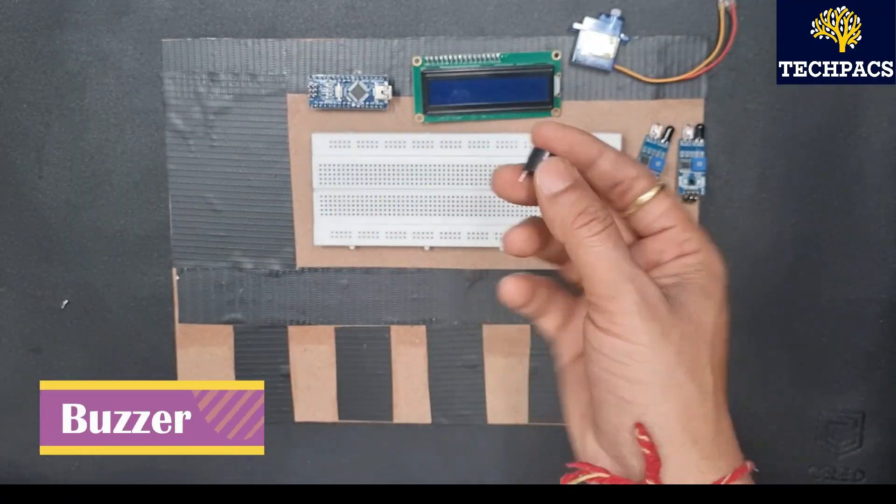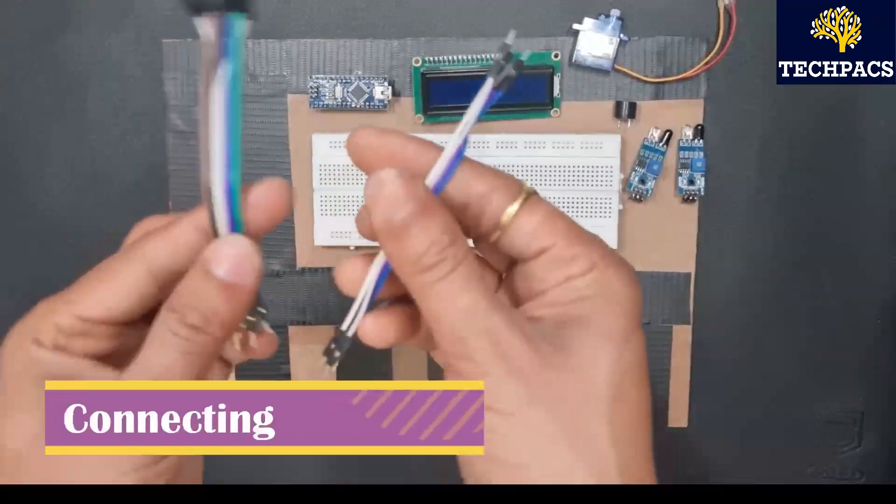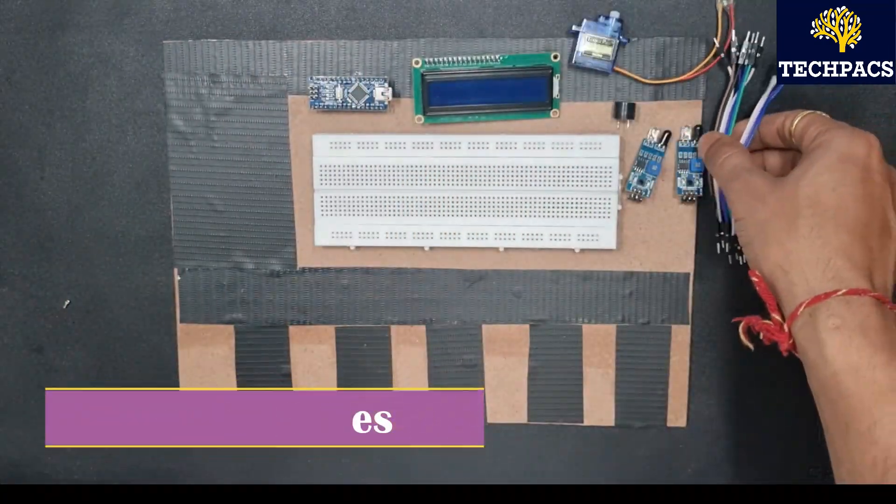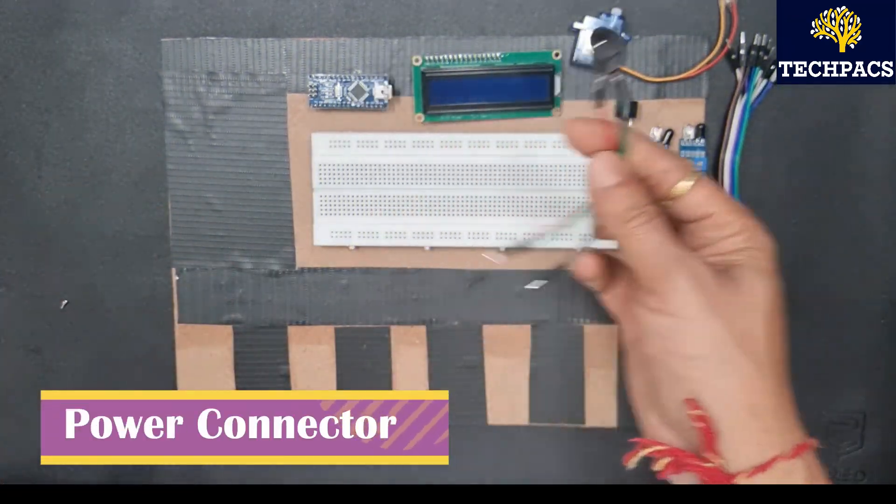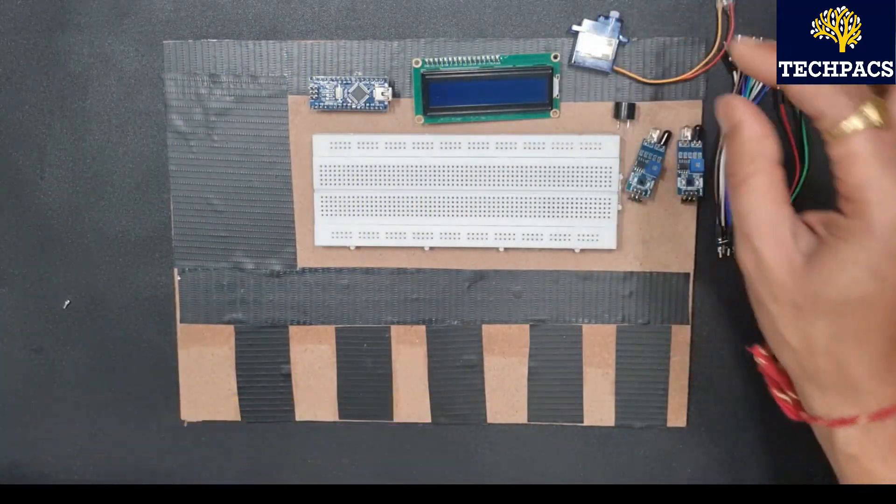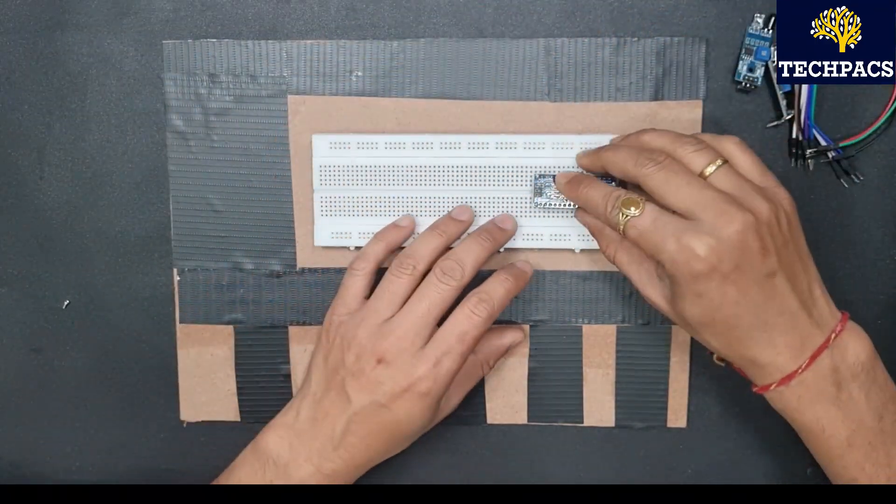Further we have a buzzer for the indication of the filled slots. Next we have connecting wires for connecting all of the components, and lastly we have a power connector. Now let's start constructing this project. So here first of all I have taken Arduino Nano.